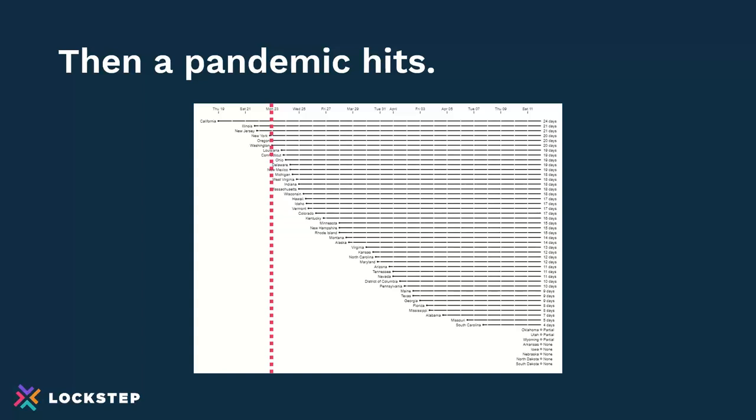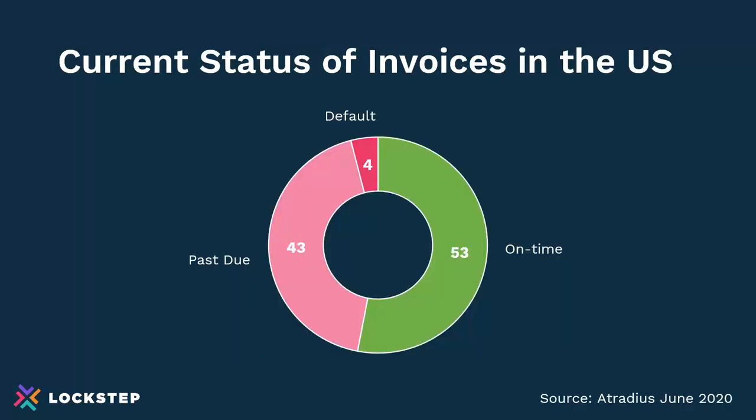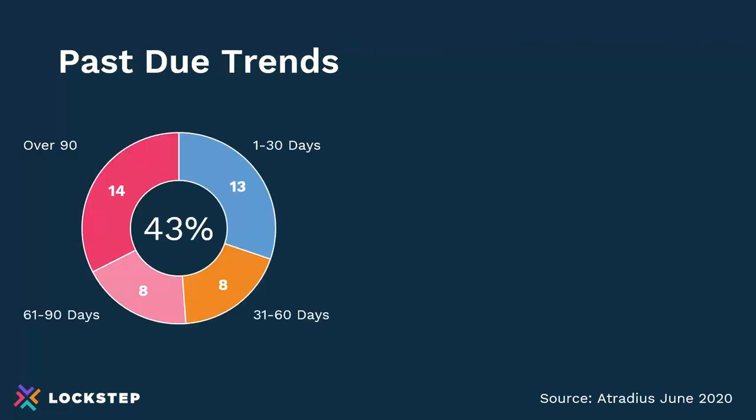Your policies around credit are important. Even the question of whether you change your policy to no longer take paper checks and start moving people to digital. The pandemic is playing out in terms of impacts on cash flow. According to Atradius — a trade credit insurance company that does surveys to understand what's going on in the industry — their surveys from June indicated that past due invoices now make up 43% of the total. To put it in perspective, that's up from 24% in last year's survey. Defaults are up to 4%, compared to 1% last year, so it is having an impact. If you dig deeper into the past due trends, the percentage of over 90 days grew from 10% last year to 14%, having a significant impact on DSO and cash flow.